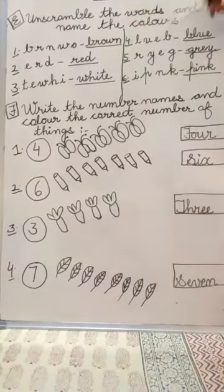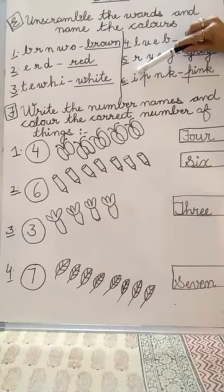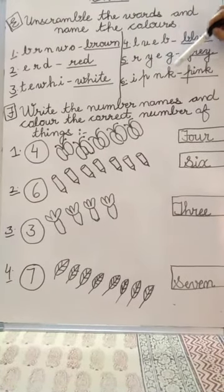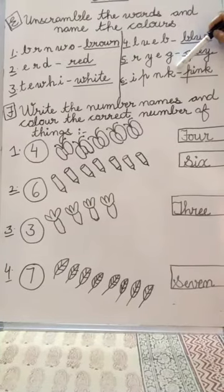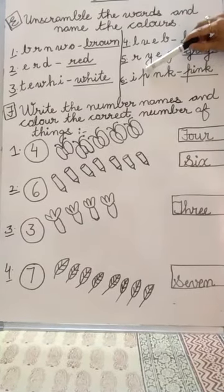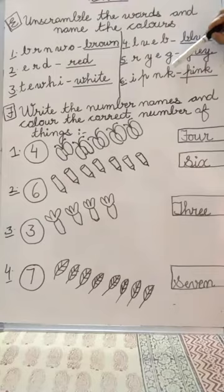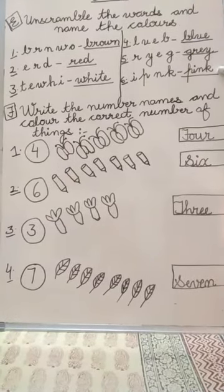Next sixth one is four letters again. I, P, N, K. It is very easy. Pink. P, I, N, K. Arrange it and write it here. Pink.